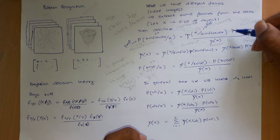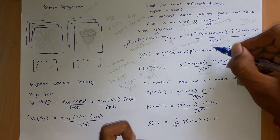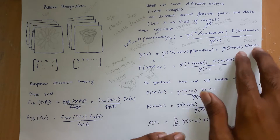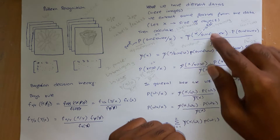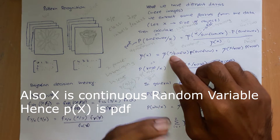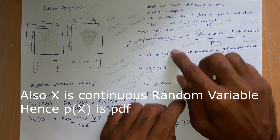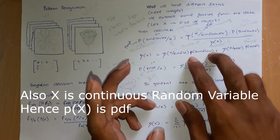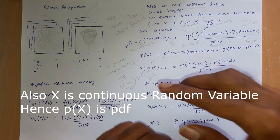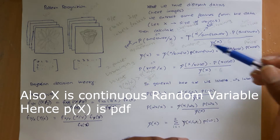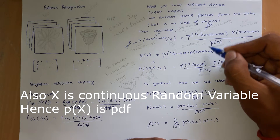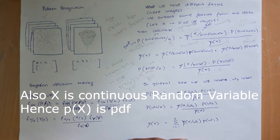The evidence is again a continuous density function, because it is the sum of terms where the likelihood — which is continuous — is multiplied by something. So a continuous function times a discrete value, summed over classes, gives you a continuous density. Please note this notation: small p for PDF and capital P for PMF.